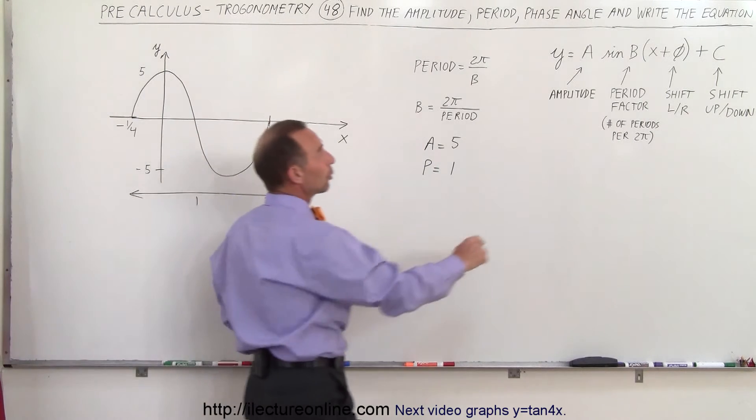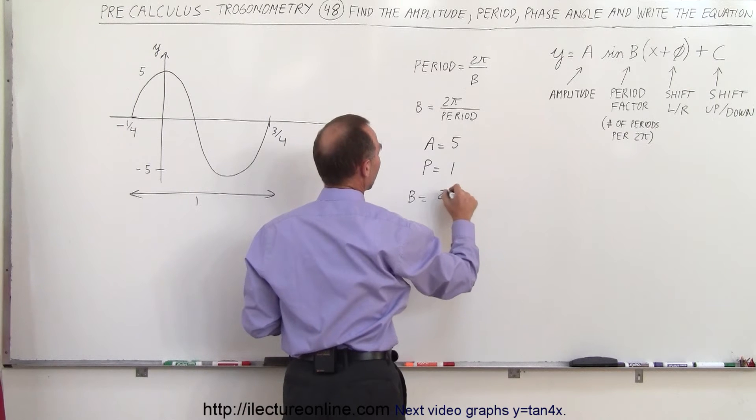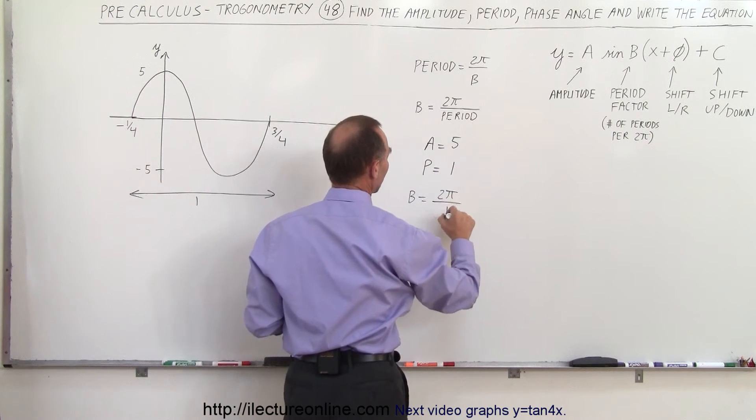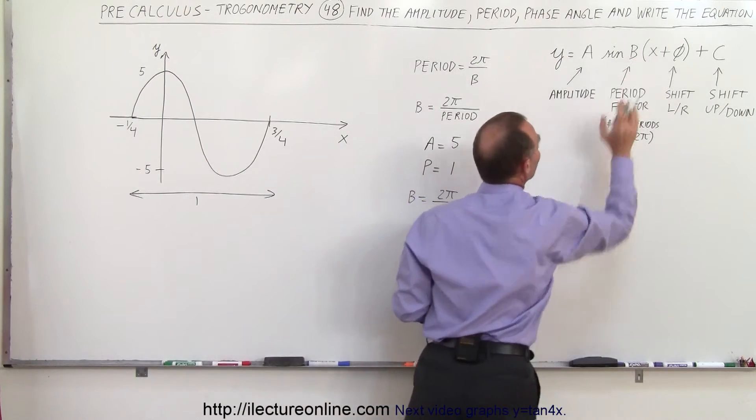That means the period factor B can be found by taking 2π divided by the period, which is one, which equals 2π. So the number over here needs to be 2π.